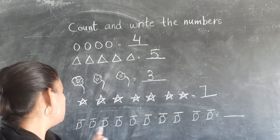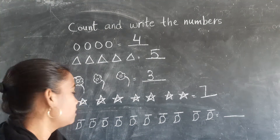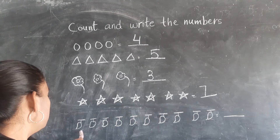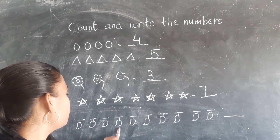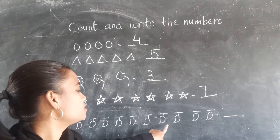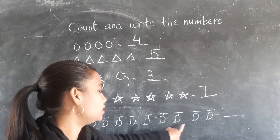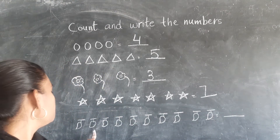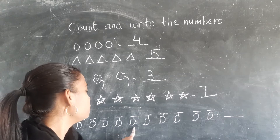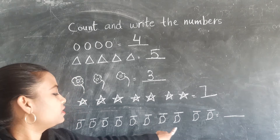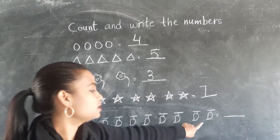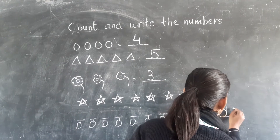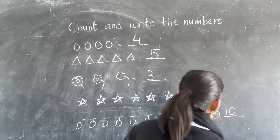Now last. These are mangoes, yes? So you have to count. How many mangoes are there? 1, 2, 3, 4, 5, 6, 7, 8, 9 and 10. Again, 1, 2, 3, 4, 5, 6, 7, 8, 9 and 10. So you have to write here, 1, 0, 10.